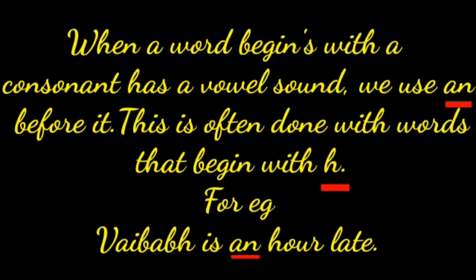When a word begins with a consonant letter but has a vowel sound, we use AN before it. This is often done with words that begin with H. For example: Weibow is an hour late — 'hour' begins with a consonant letter but has a vowel sound, so we use AN before it.